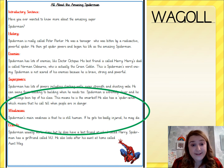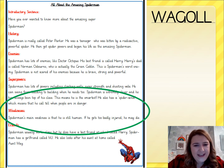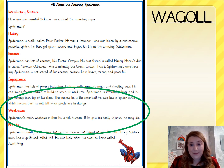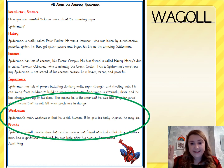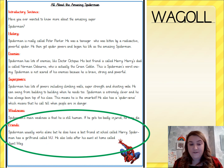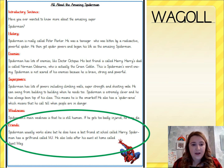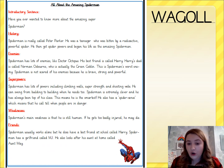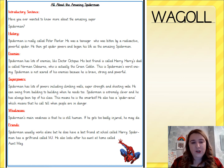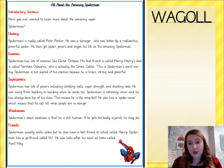Spider-Man's main weakness is that he is still human. If he gets too badly injured, he may die. So that's his main weakness. We've heard about his history, his enemies, his superpowers, and his weaknesses. Now the final subheading: Friends. Spider-Man usually works alone, but he does have a best friend at school called Harry. Spider-Man has a girlfriend called MJ. He also looks after his aunt at home called Aunt May.